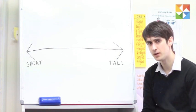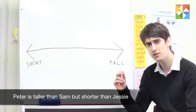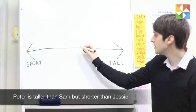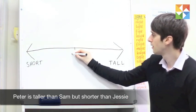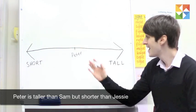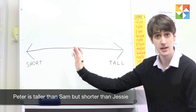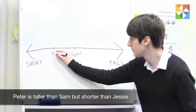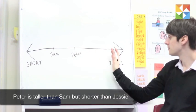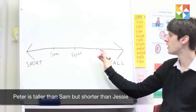The first piece of information we're given is that Peter is taller than Sam, but shorter than Jesse. So we know that we can put Peter somewhere in the middle. Sam is going to have to be on the shorter side, and Jesse is going to have to be on the other side, taller than Peter.